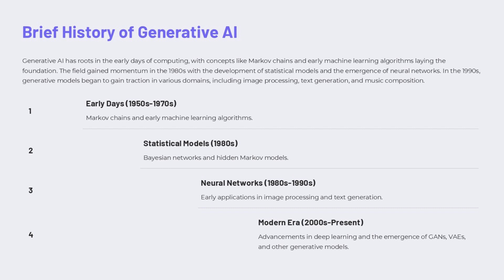Generative AI has a rich history, with roots tracing back to the early days of computing in the 1950s to 1970s. During this foundational period, concepts like Markov chains and early machine learning algorithms laid the groundwork for the field. In the 1980s, we saw the emergence of more sophisticated statistical models such as Bayesian networks and hidden Markov models. This was also the decade when neural networks started to gain traction, with early applications in areas like image processing and text generation. The 1990s brought further advancements as generative models continued to evolve and gain momentum.